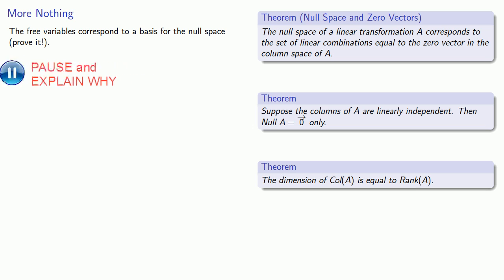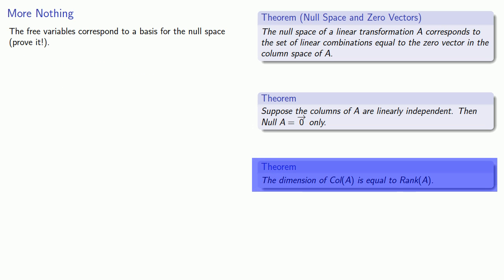If we put together all of our results, namely that the dimension of the column space of A is equal to the rank of A and the number of free variables corresponds to the number of vectors in the basis for the null space, then we have the following theorem.